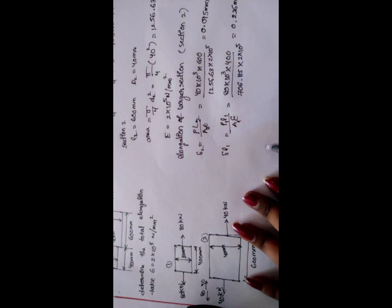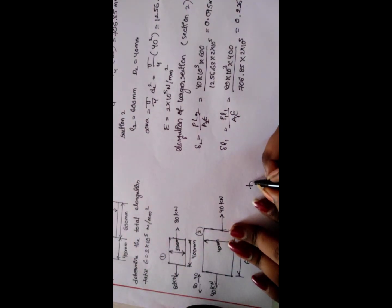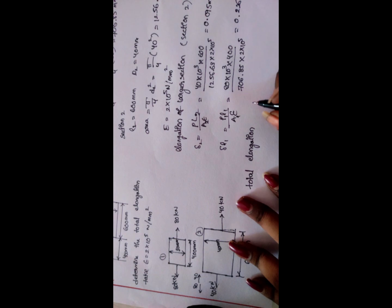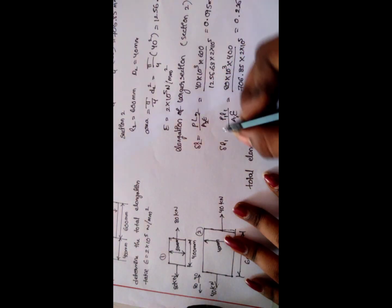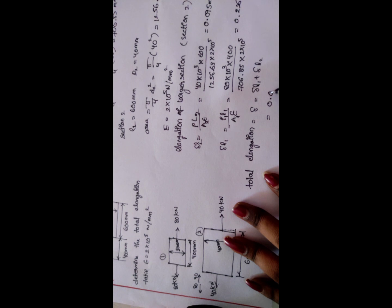Total elongation: delta is equal to delta L1 plus delta L2. 0.095 + 0.226 = 0.321 mm.